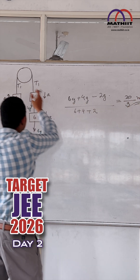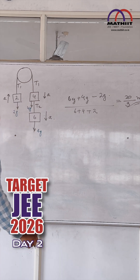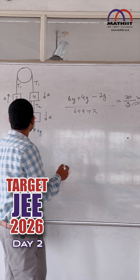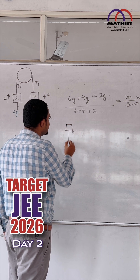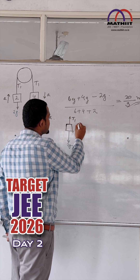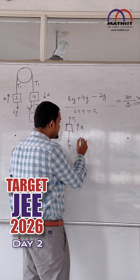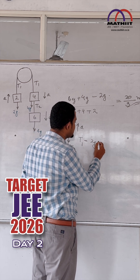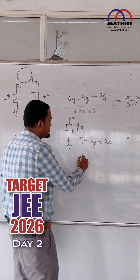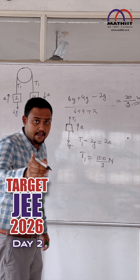So this is the acceleration of the blocks. How do we find the tension T1? Let us focus on the free body diagram of the 2 kg mass. When we draw the free body diagram of the 2 kg mass, we find that there is 2g downwards, T1 upwards, and an acceleration a in the upward direction. The dynamic equation is T1 minus 2g equals 2 times a.